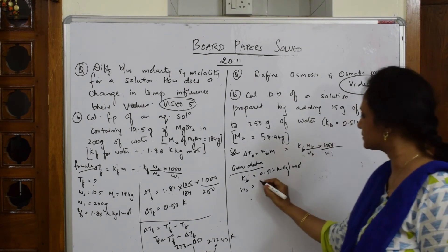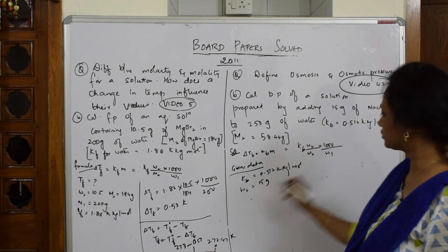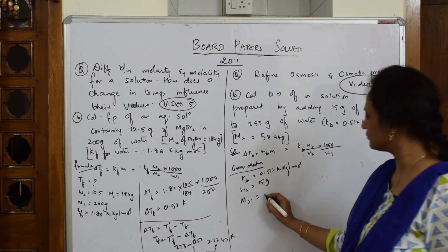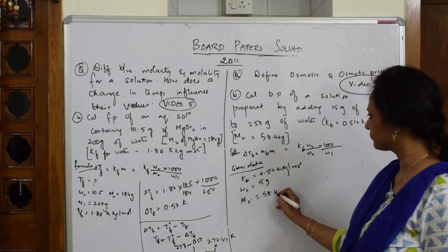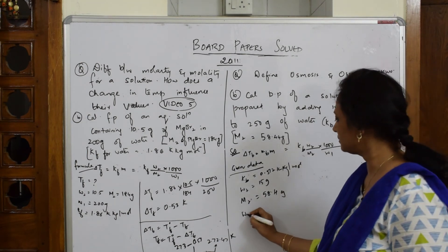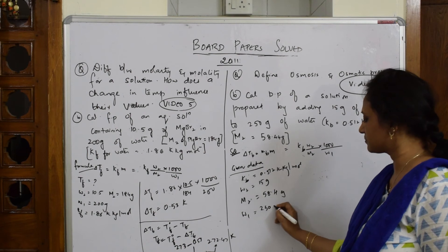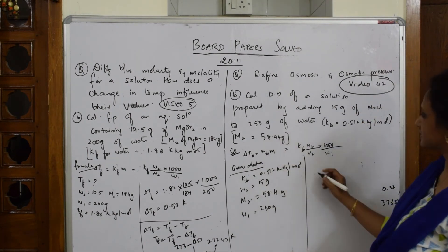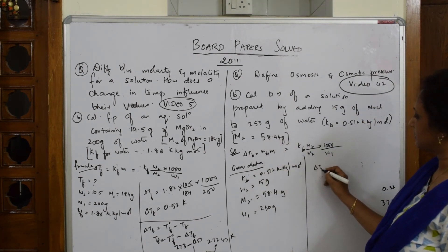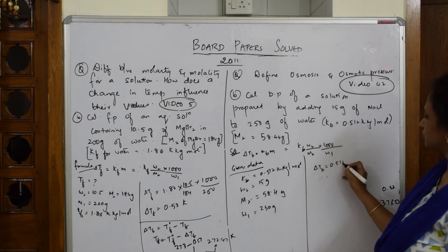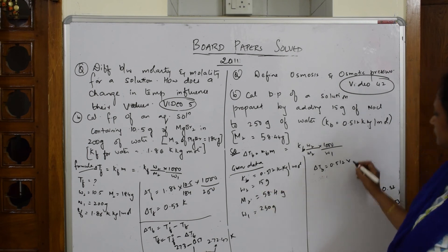15 grams is w2. Molecular mass of NaCl m2 is 58.4 grams. W1, weight of water, is 250 grams.